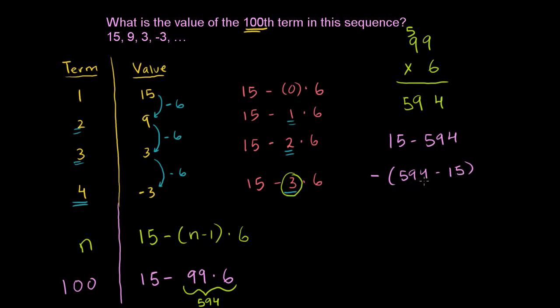This is much easier for my brain to understand. So what's 594 minus 15? We could do this in our head. 594 minus 14 would be 580. And then 580 minus one more would be 579. So that right there is 579. And then we have this negative sign sitting out there. So the 100th term in our sequence will be negative 579.